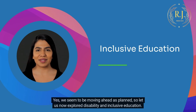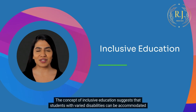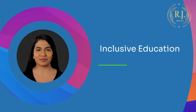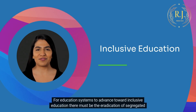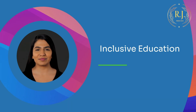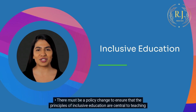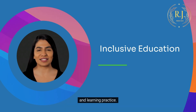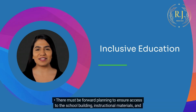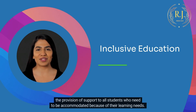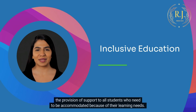So let us now explore disability and inclusive education. The concept of inclusive education suggests that students with varied disabilities can be accommodated within our main school system. For education systems to advance toward inclusive education, there must be the eradication of segregated school systems. There must be a policy change to ensure that the principles of inclusive education are central to teaching and learning practice. There must also be forward planning to ensure access to the school building, instructional materials, and the provision of support to all students who need to be accommodated because of their learning needs.